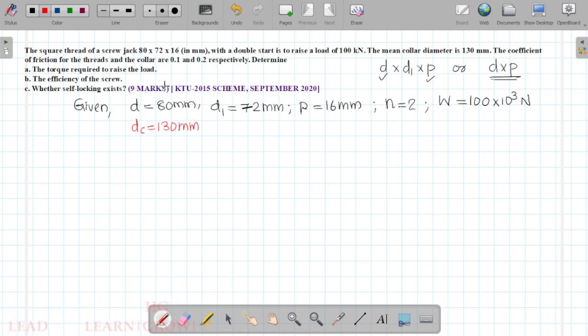Then, the coefficient of friction for the thread is 0.1. The fc value for collar is 0.2.